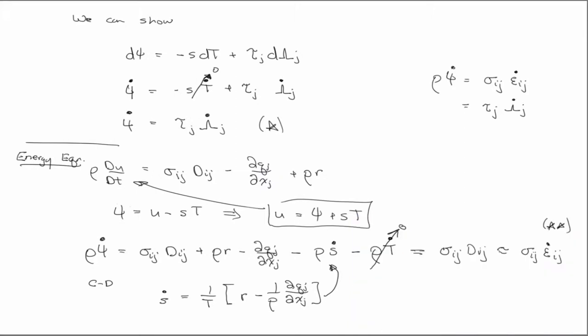When I plugged in this Helmholtz free energy function for the internal energy and then commuted the material time derivative, that's fine—it commutes. I also replaced it with a dot. That's just notation, it's not a big deal. But when I commuted it, it produced these two terms.